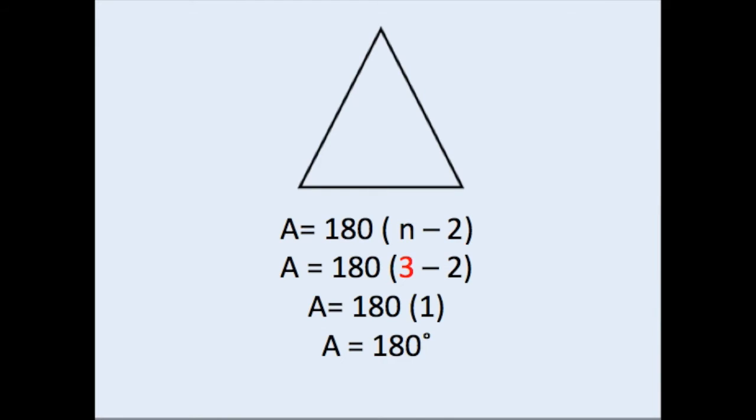Looking at our first polygon, which is a triangle, we note that a triangle has 1, 2, 3 different sides. We start off with our original formula, then we're going to substitute in a 3 for the n because a triangle has 3 sides. Then we can do what's in the parentheses first, so 3 minus 2 is 1, and 1 times 180 is equal to 180. So the angle sum of any triangle is going to be 180 degrees.